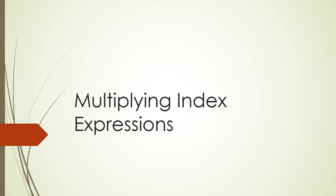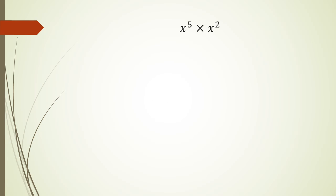Hi guys, in this session we're going to be looking at multiplying index expressions. To get started, we've got a question here: x to the power of 5 times x squared. If you remember from the previous video, you would know that x to the power of 5 is x times x times x, all the way to 5, and then x squared.